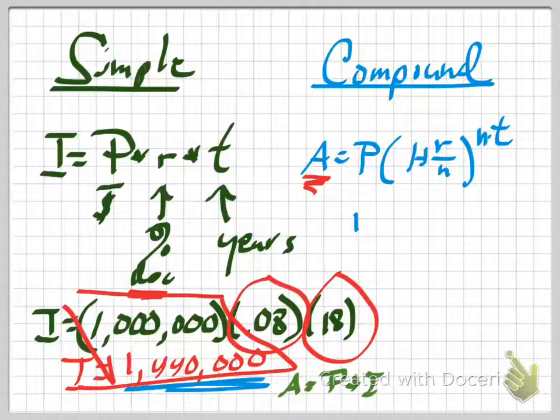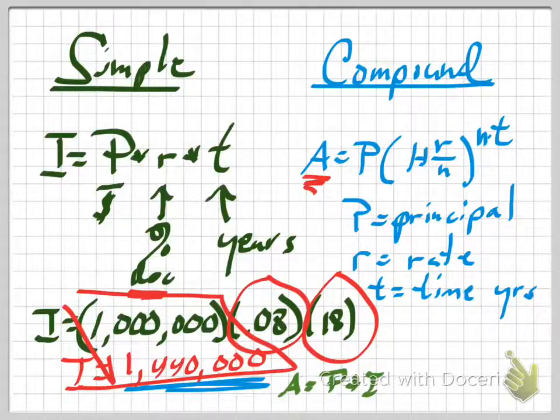The formula for compound interest uses the same P, R, and T, but arranged differently. It's A equals P times the quantity 1 plus R over N, raised to the N times T power. P stands for the principal, R stands for the rate, and T stands for the time in years — exactly the same as in the simple interest formula. The difference is that instead of getting the interest, this formula gives you the actual account balance. There is one extra variable, N, which appears twice in the formula.